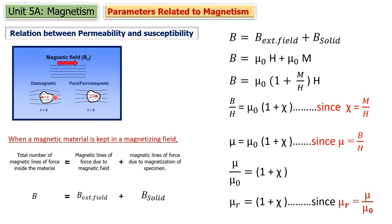Let us now derive the relation between these two. Suppose this material is kept in an external magnetic field of strength H, and the magnetization of the material is M. When the material is kept in the external magnetic field, magnetic flux passes through it and magnetic induction is produced inside. The magnetic induction produced inside the material is not only due to the external magnetic field — it also depends on the magnetization of the material itself.